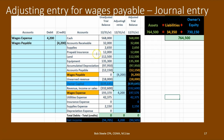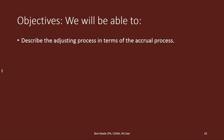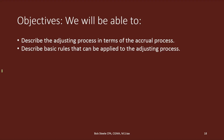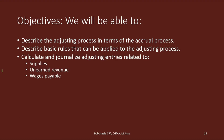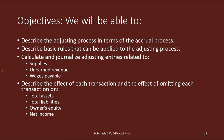If three days of wages equals $4,200, we debit wages expense by $4,200 and credit wages payable by $4,200. This increases the expense and brings net income down. If we omit this entry, net income would be overstated on the income statement, and liabilities would be understated. We are now able to describe the adjusting process in terms of the accrual process, describe basic rules, calculate and journalize adjusting entries related to supplies, unearned revenue, and wages payable, and describe the effect of each transaction and the effect of omitting each transaction on total assets, liabilities, owner's equity, and net income.